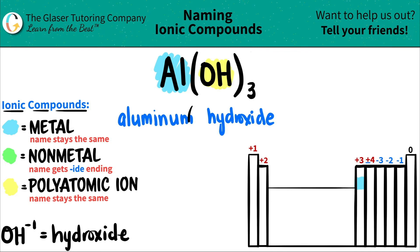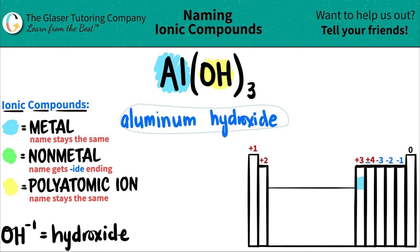And now since it's ionic, let's just make sure. Do we need a Roman numeral or not? Roman numeral is always for transitional metals, right? Or the transition metals in this block. Aluminum is not part of the transition metals.